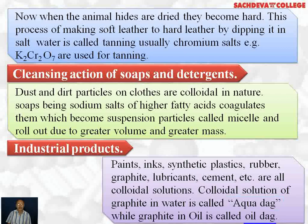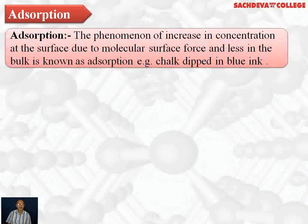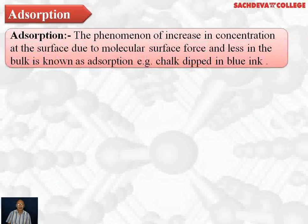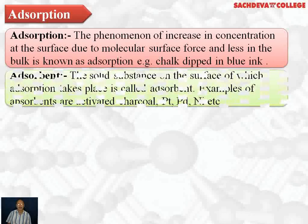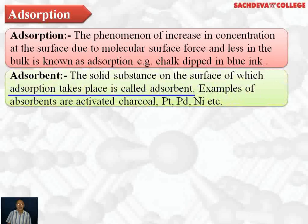Next, we take up adsorption. The phenomenon of increase in concentration at the surface due to molecular surface forces, with less concentration in the bulk, is known as adsorption. For example, if we dip chalk in blue ink, the surface is blue but inside it is white — this is an example of adsorption. The solid substance on which adsorption takes place is called the adsorbent — for example, activated charcoal, platinum, and nickel.